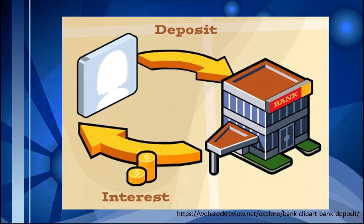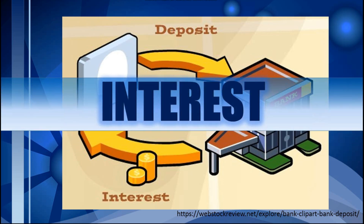What can you say about this image? This image shows a cycle of a person putting his money in the bank and coming out with an interest. How about you — do you trust your money in the bank? When we save, our money earns a certain amount of interest, and having interest is a way to earn money. So if you want to learn more about interest, watch this video.